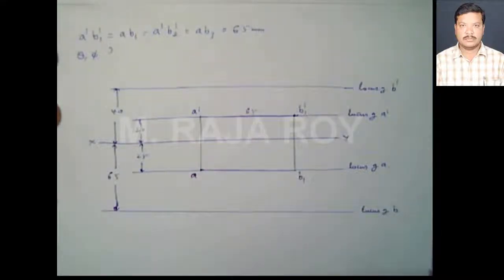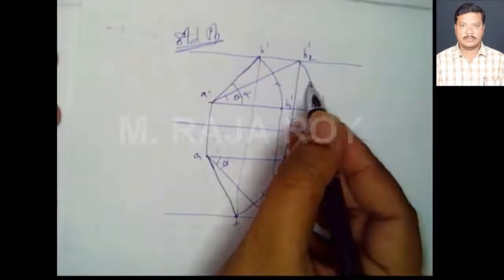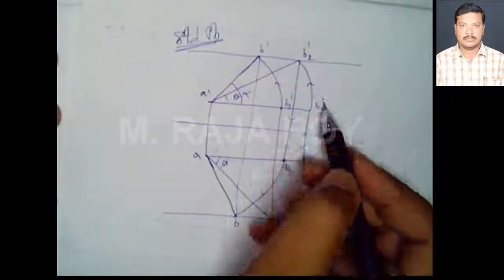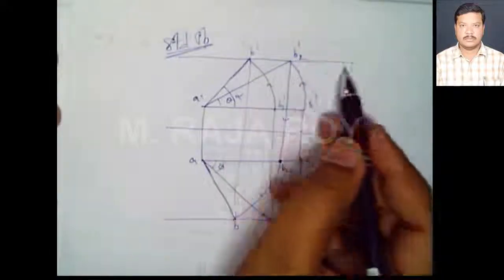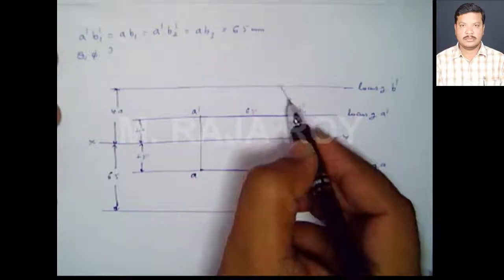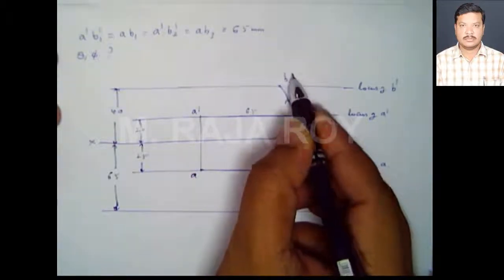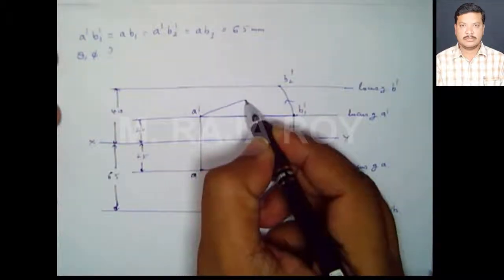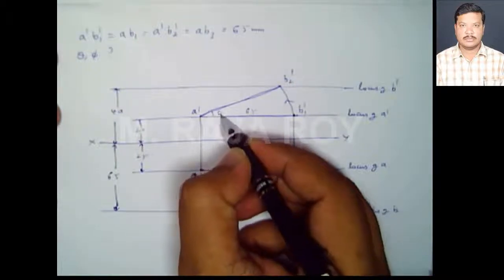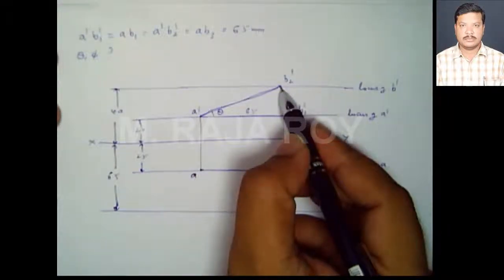Now if you rotate the line, observe what point you are getting. In the standard problem, if you rotate B1' you are going to get B2'. Instead of giving theta directly, the locus is given. By rotating B1' until it intersects with this locus line, the point you get is B2'. Now A'B2' is again the true length, and this angle is the true inclination theta.